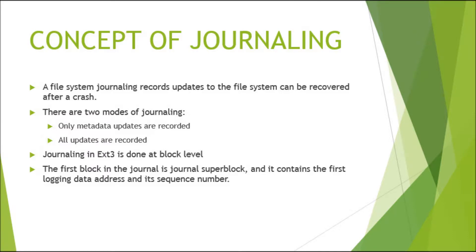Journaling in a file system records updates so they can be recovered after a crash. There are two modes of journaling: only metadata updates are recorded, or all updates are recorded. In ext3, journaling is done at block level. The first block in the journal is the journal superblock, which contains the first logging data address and its sequence number.